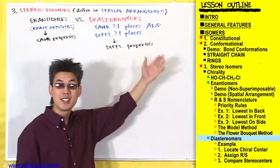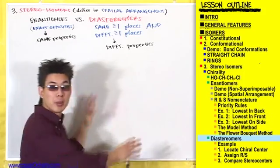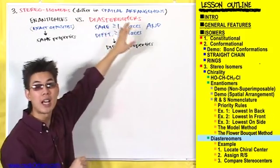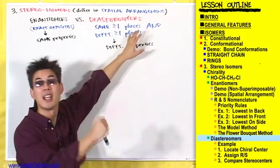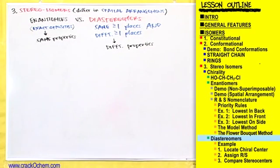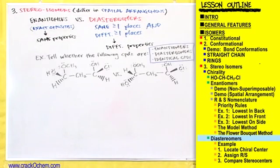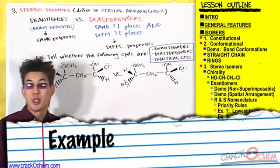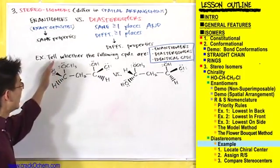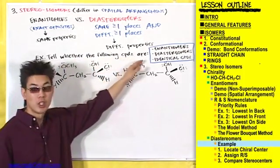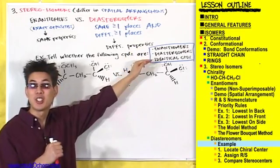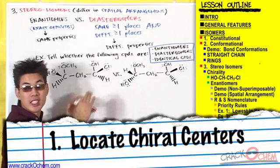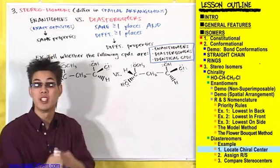The best way to show what this means is by an example. Your professor can ask something like: tell whether the following compounds are enantiomers, diastereomers, or identical compounds. How you check for this is by locating the chiral centers in each compound and then assigning R or S configurations to each.